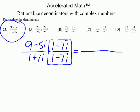How do you multiply this? We've got to use FOIL. FOIL is a way to multiply complex numbers or binomials. We're working on 9 minus 5i times 1 minus 7i.